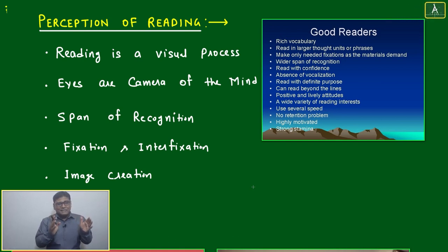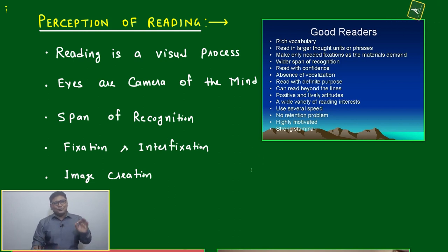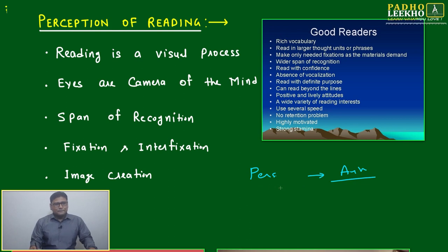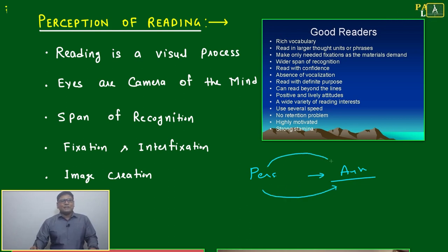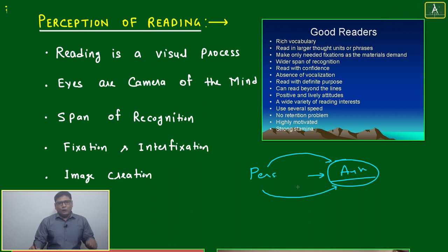How to correct our perception from a CAT point of view: if you are reading any passage, how to keep your perception correct — don't mix your personal opinion with the author's opinion. The author may be writing for a different purpose. You are just an observer, just an inspector. You are going to inspect what the author is trying to say, what the author is trying to follow, what the author is trying to prove.